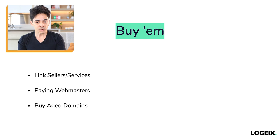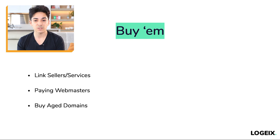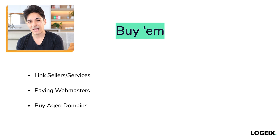You can also buy aged domains. You can use these for a private blog network — building your own websites on top of them and linking to yours. You can also buy them and 301 redirect them. A 301 redirect is a permanent redirect from another website to yours. When you buy an aged domain that has a bunch of backlinks already and redirect it into your own website, that can provide a massive boost in rankings if done correctly. It's risky — not something I'd do for a client — but it's something you should know and is fun to play around with.